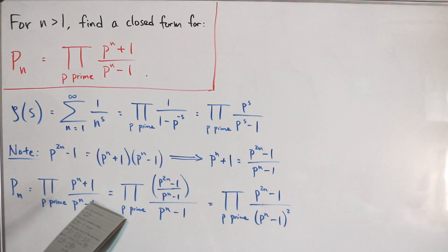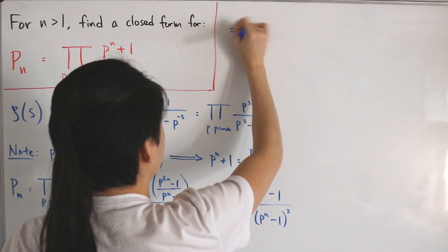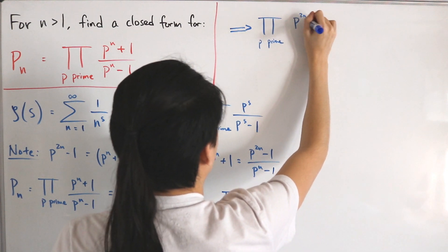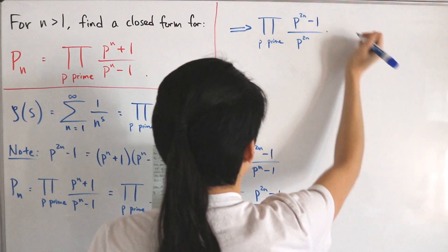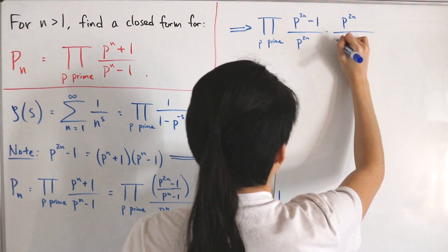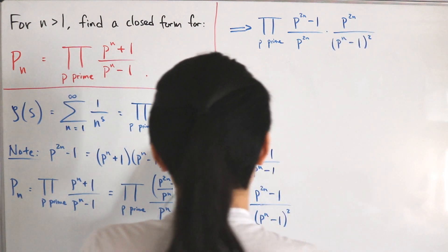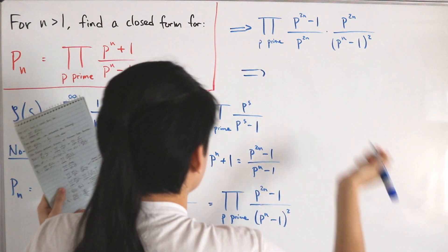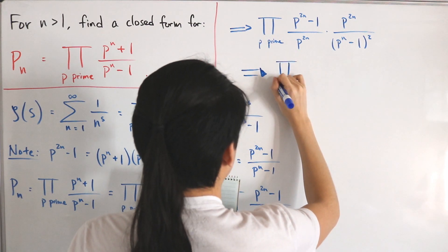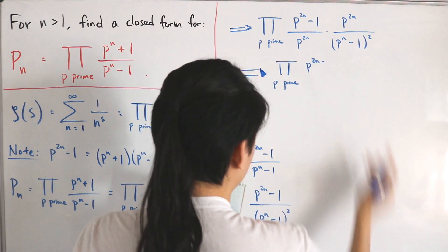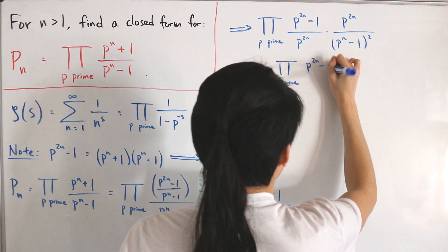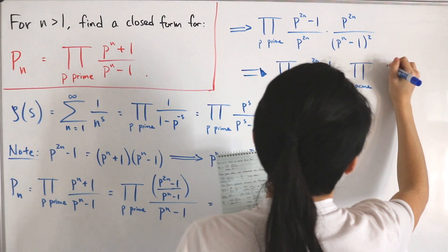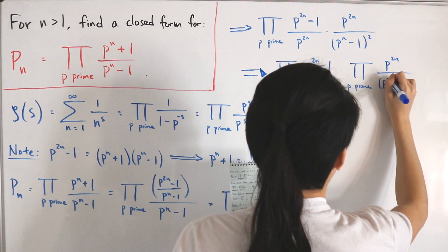Next, I'll multiply and divide by p^(2n). This lets me split the expression: the product over primes of (p^(2n) - 1) divided by p^(2n), multiplied by the product over primes of p^(2n) divided by (p^n - 1)². Splitting into two separate product series using continuity of products.